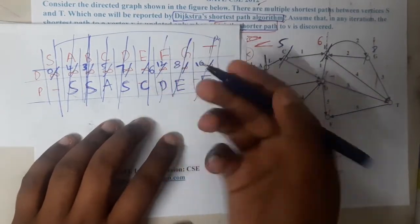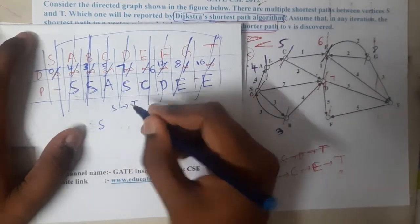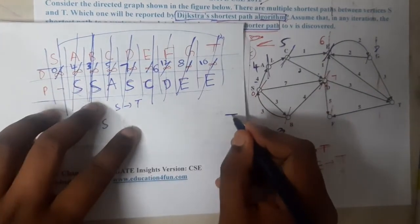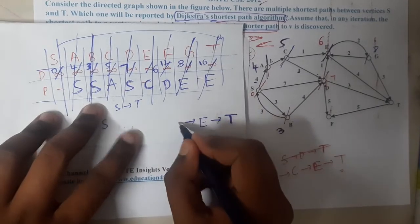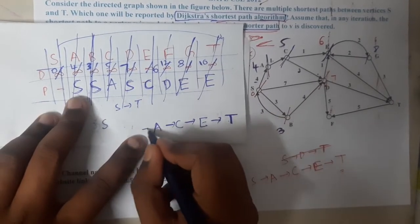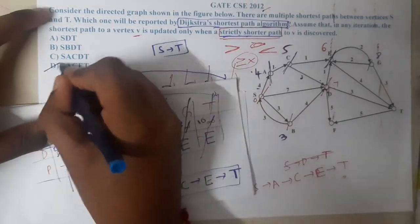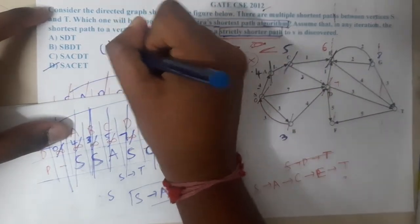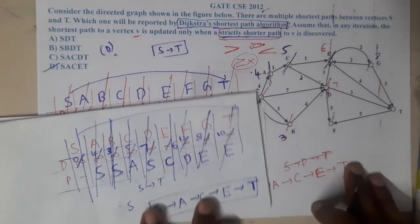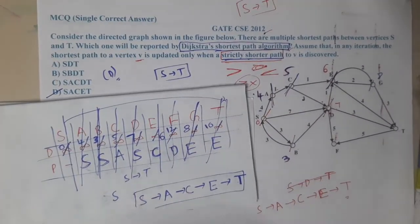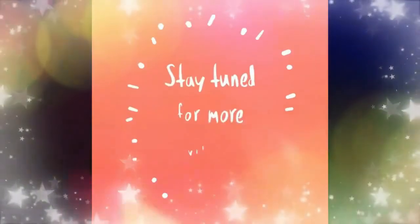Now we reconstruct the path from s to t in reverse. The parent of t is e, the parent of e is c, the parent of c is a, and the parent of a is s. So the shortest path reported by Dijkstra's algorithm is s → a → c → e → t, which corresponds to option D. Thank you, like, share, and subscribe for more videos.